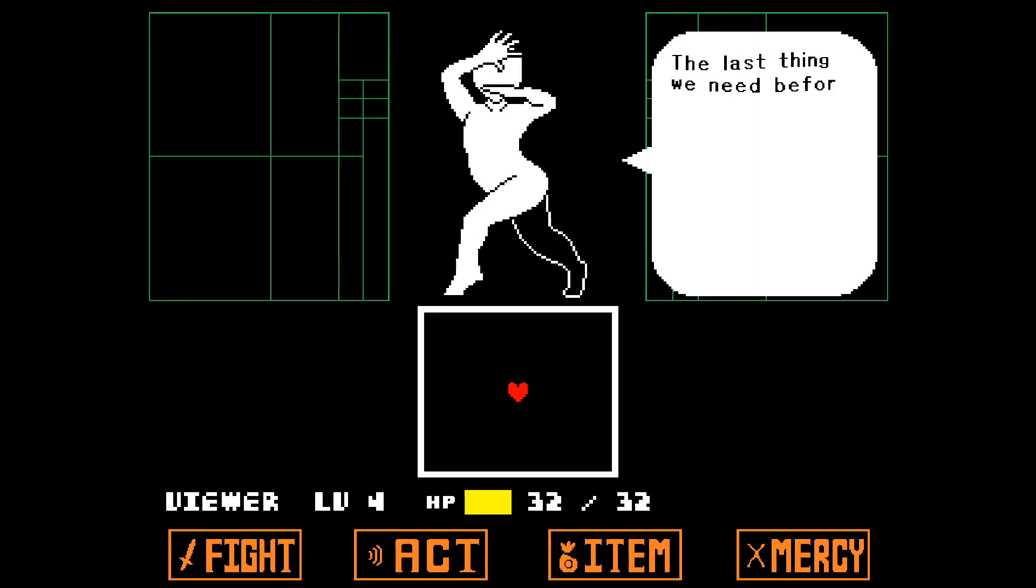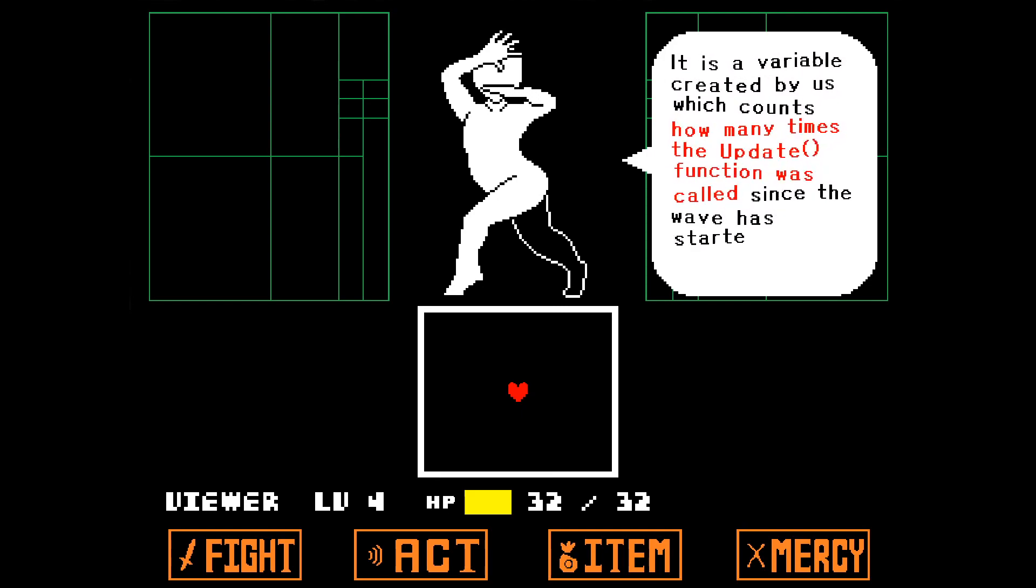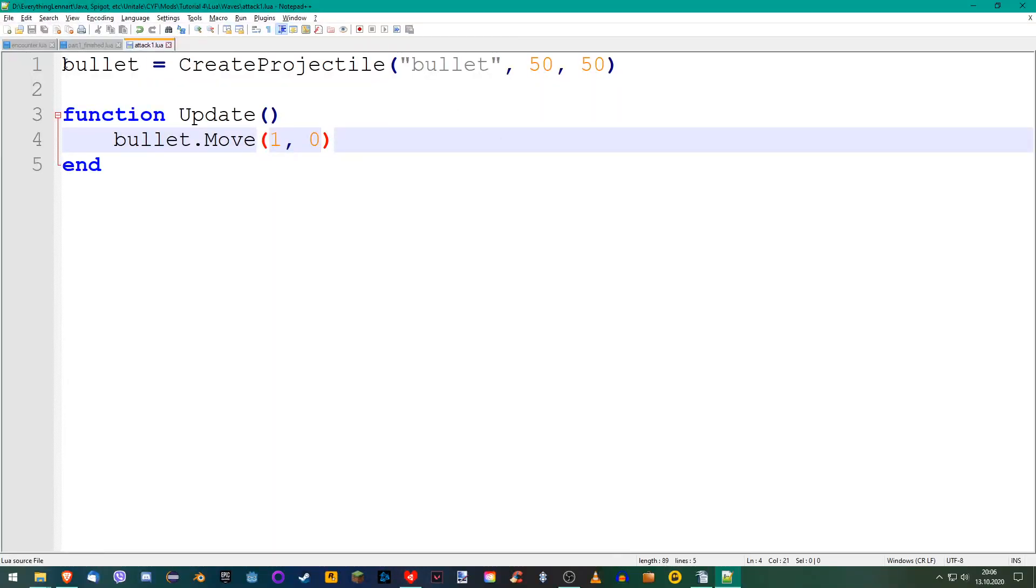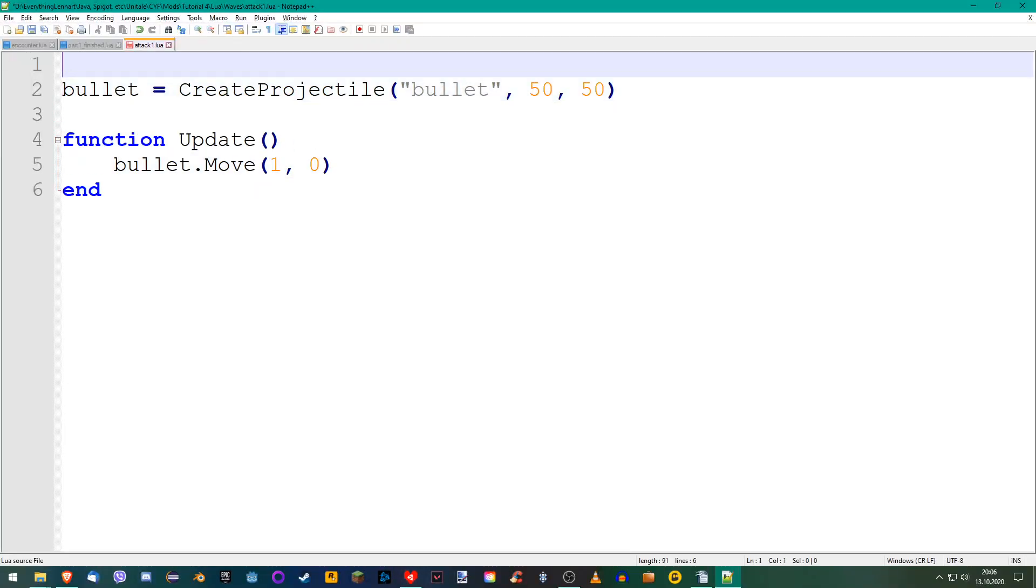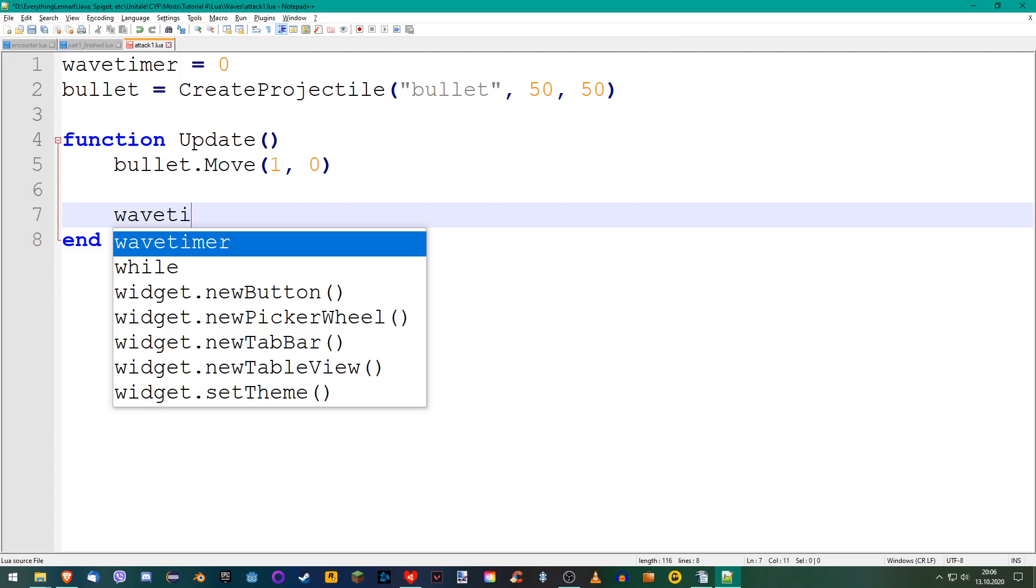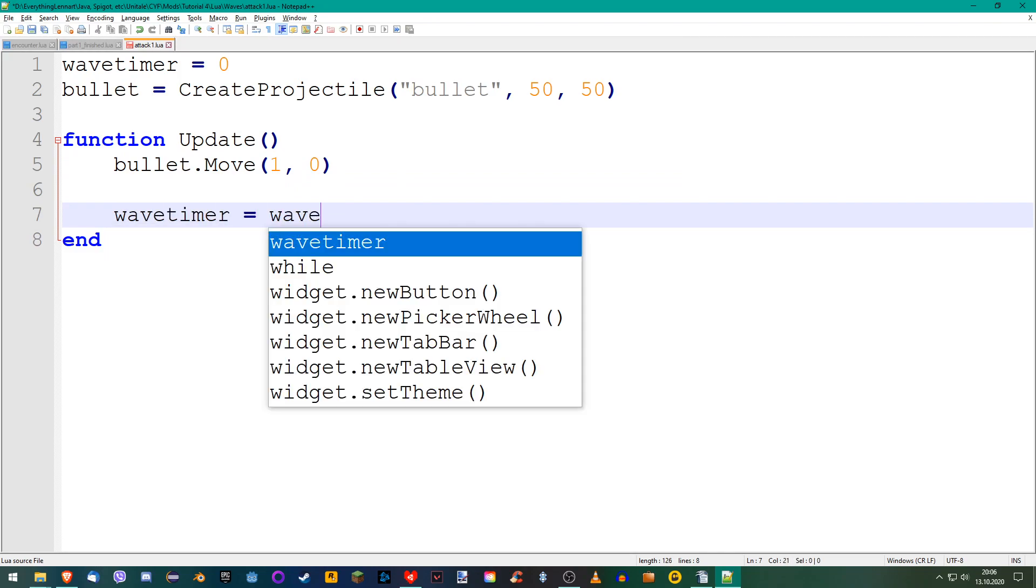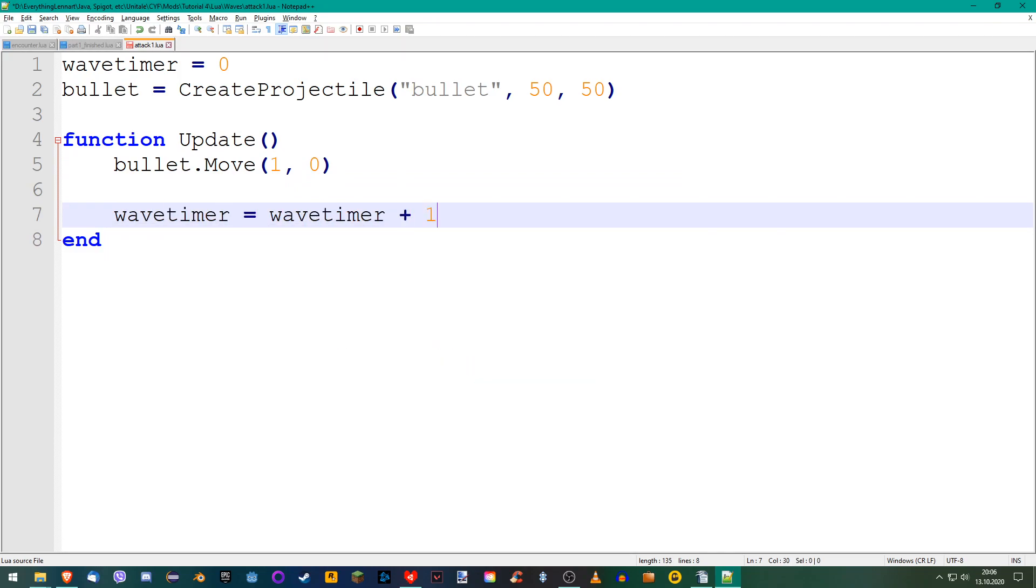The last thing we need before we can create our final wave is the so-called wavetimer. It is a variable created by us which counts how many times the update function was called since the wave has started. To create it, simply create a variable called wavetimer at the start of the wave and set it to zero. At the end of the update function, write wavetimer equals wavetimer plus one. This increases the value of the variable by one every time the update function reaches its end.